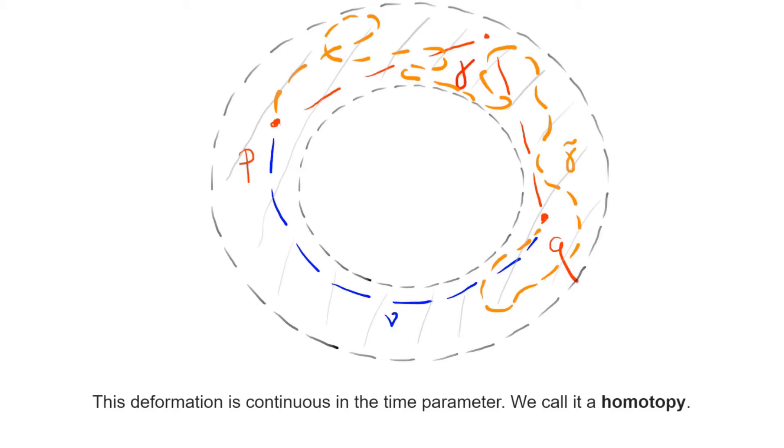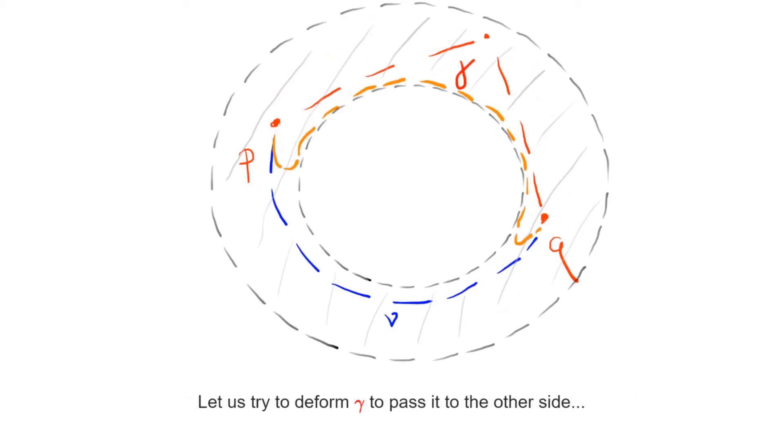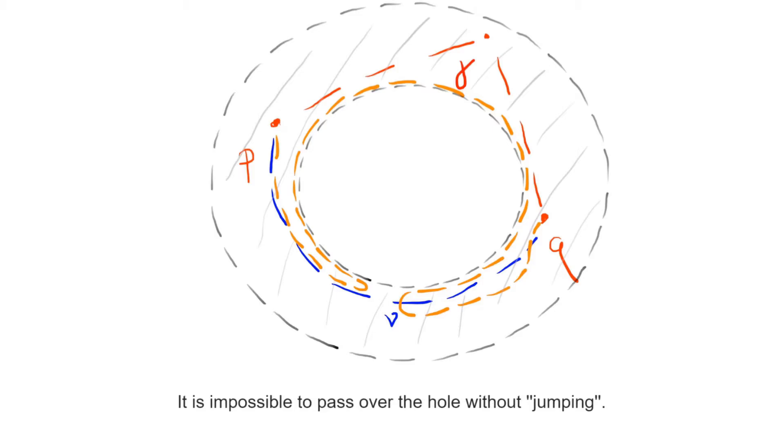Such a continuous family of curves is called a homotopy and it follows that a homotopy can never suddenly jump from one place in the annulus to another. In particular, if we try to deform gamma into nu, we will fail because the hole serves as an obstacle that we cannot cross.